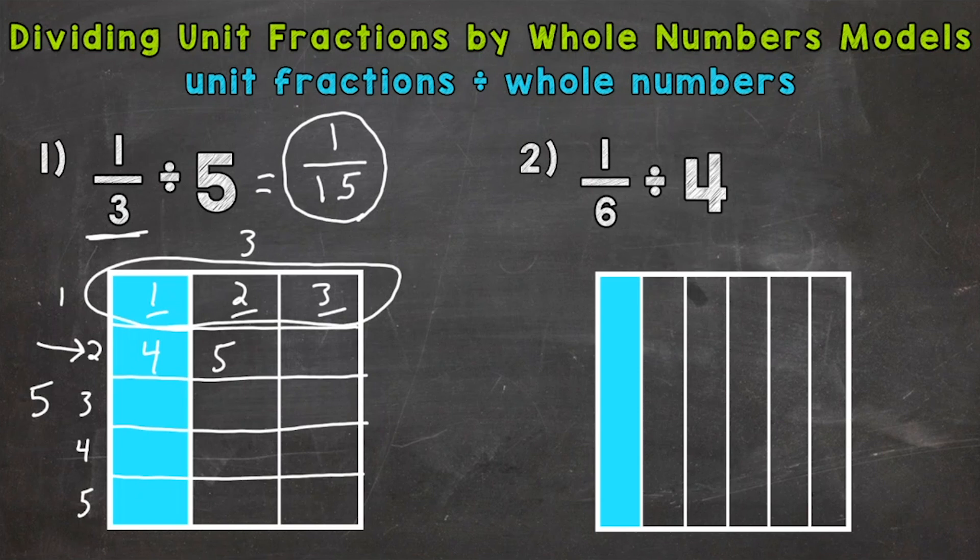So let's move on to number 2, where we have 1/6 divided by 4. So we start with a model of 1/6. And we need to split into 4 equal groups. So 1, 2, 3, and 4.